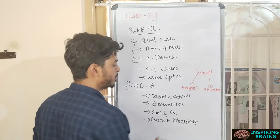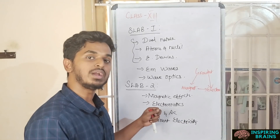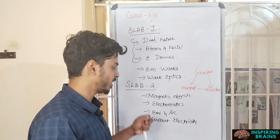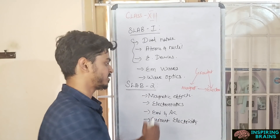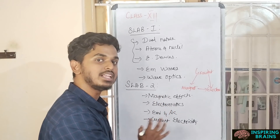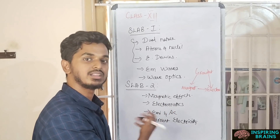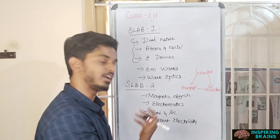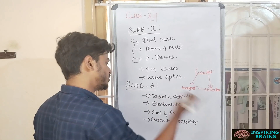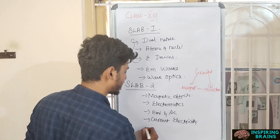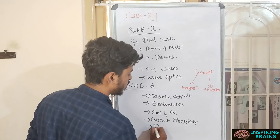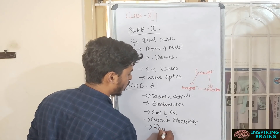Once you've done all those units and are familiar with many formulas, go with Current Electricity. Because you'll have studied formulas across various units, you can easily apply them to Current Electricity and get the answers. Finally, go with Ray Optics.